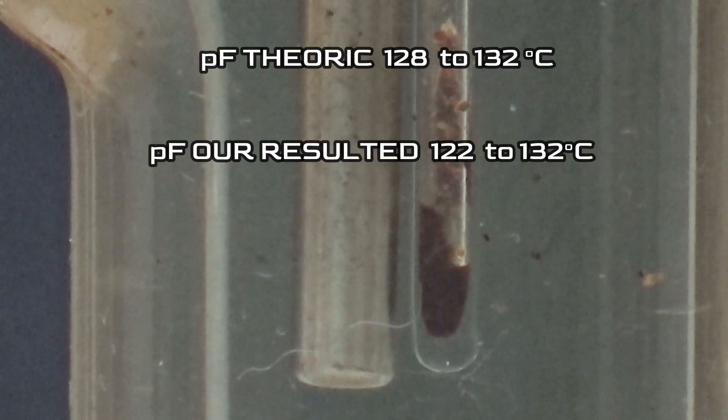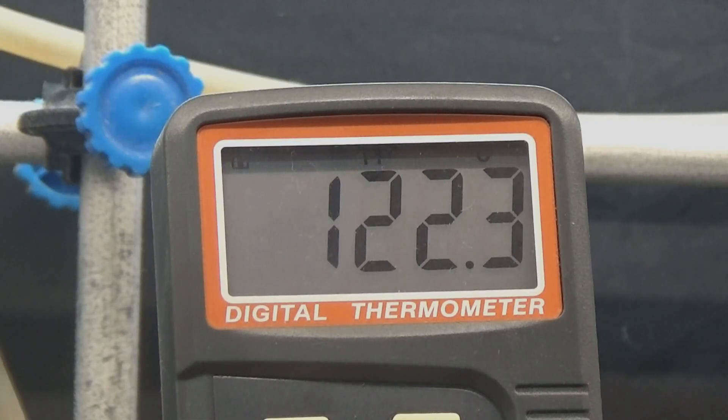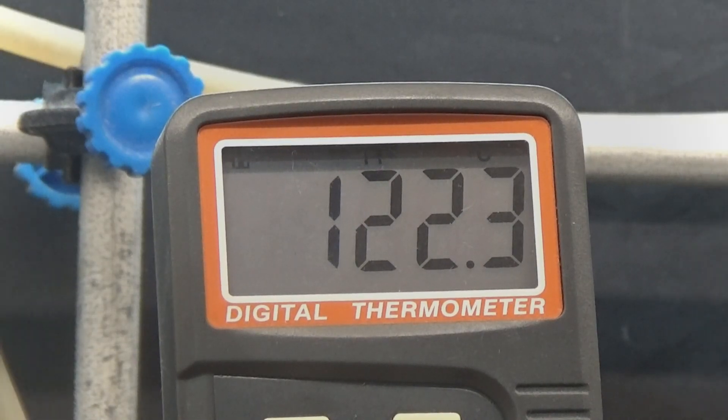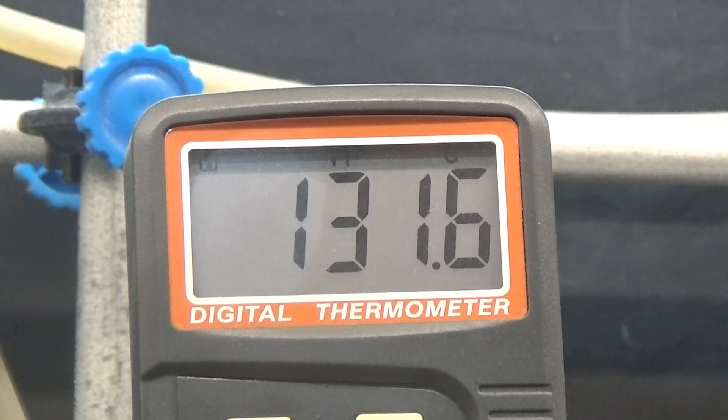According to theory, 1,3-indandione has a melting point of 128 to 132 degrees. It is possible that we have some contaminants that lower the melting point.